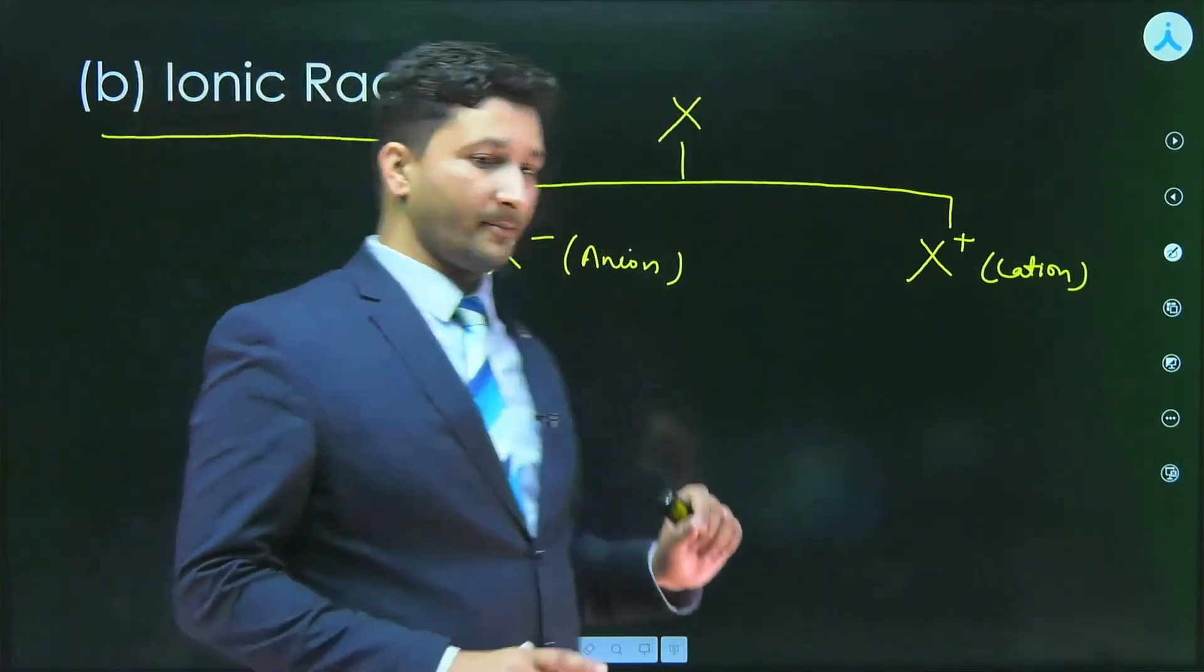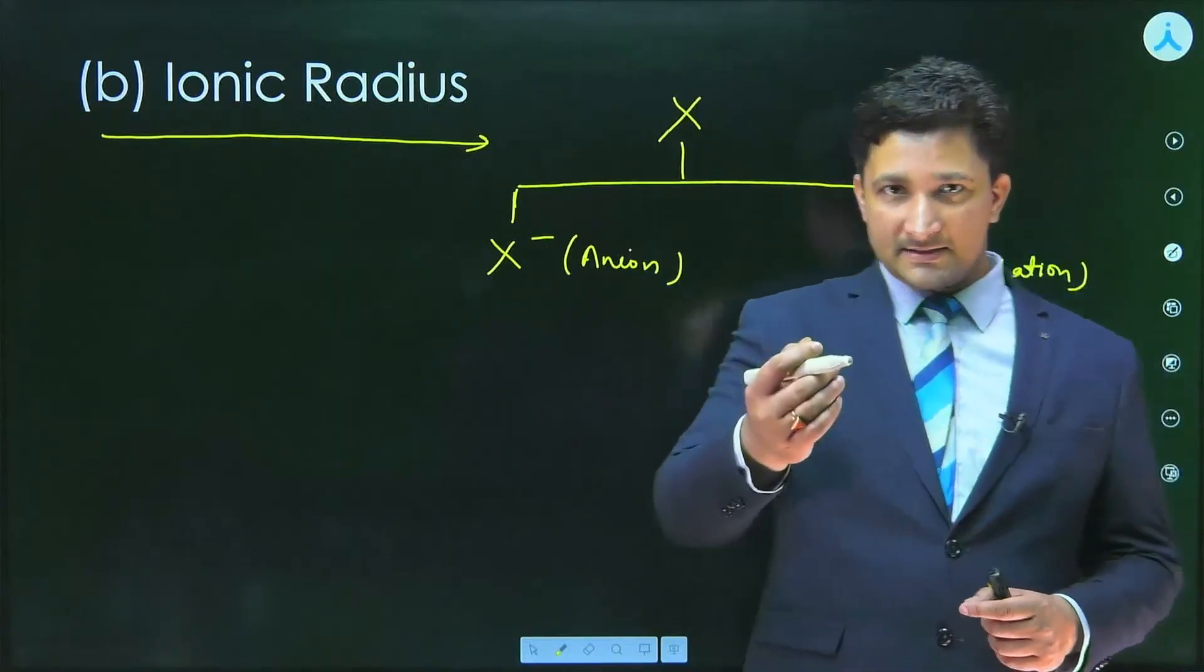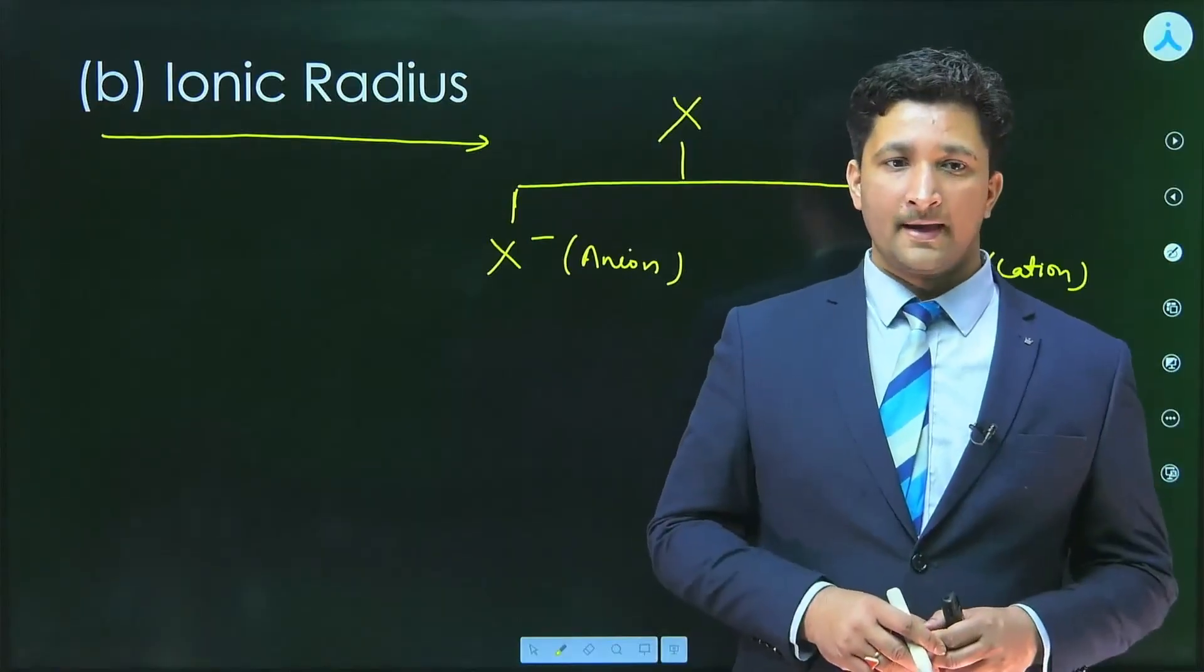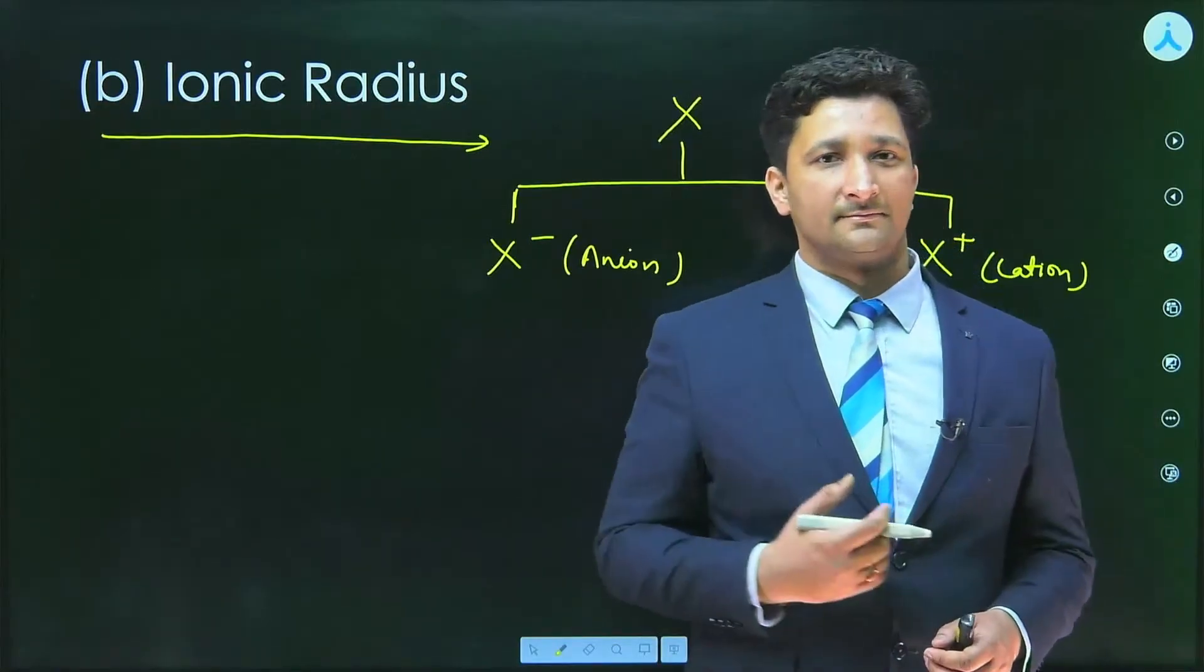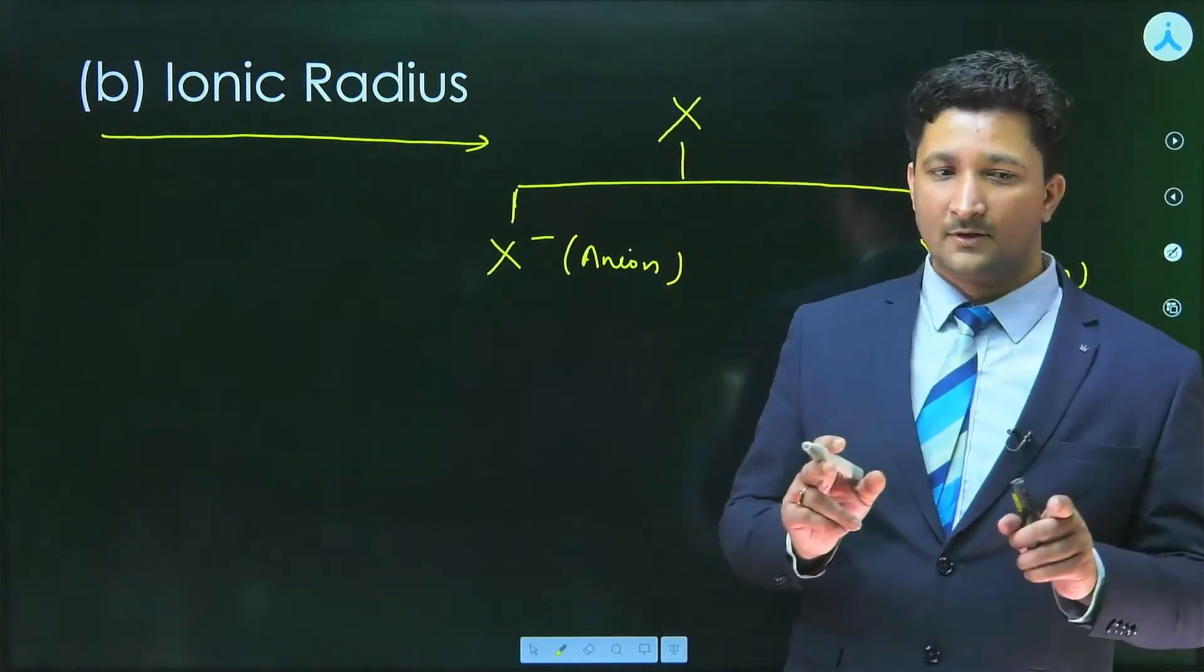So during the formation of X minus, it must have gained electrons. And as the number of electrons are increasing, the electron-electron repulsion will increase and nucleus will become weaker. As the electron-electron repulsion increases, size will increase.